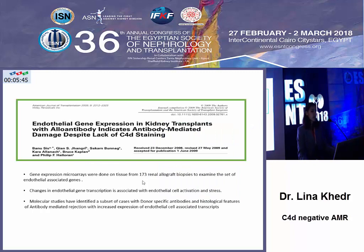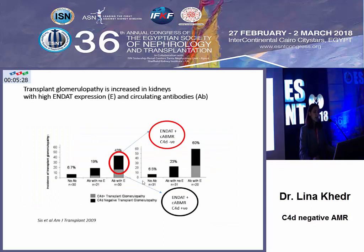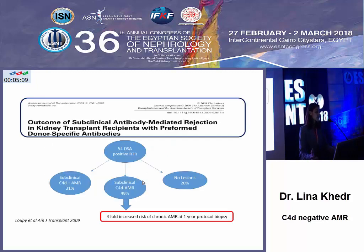In 2009, a study found that endothelium gene expression — the change in gene expression in endothelial cells when exposed to stress — correlates well with antibody-mediated rejection. But the study also found that in over 50% of biopsies with chronic antibody-mediated rejection, circulating donor-specific antibodies and high levels of endothelium gene expression were C4D-negative. In other words, C4D failed to identify over 50% of biopsies with chronic AMR. Another study of 44 presensitized individuals with protocol biopsies at three months showed findings of subclinical antibody-mediated rejection with no C4D staining, and follow-up biopsies at one year found a fourfold increase in risk of chronic antibody-mediated rejection in these patients.